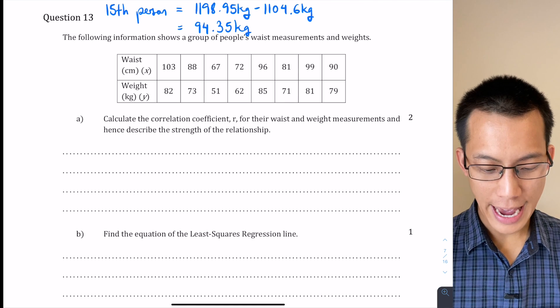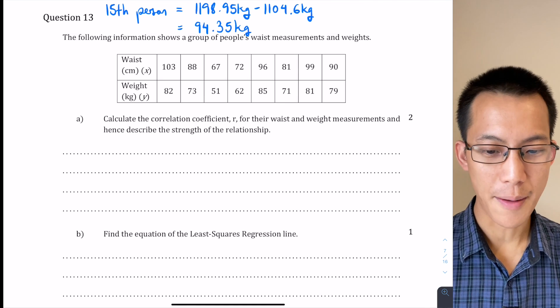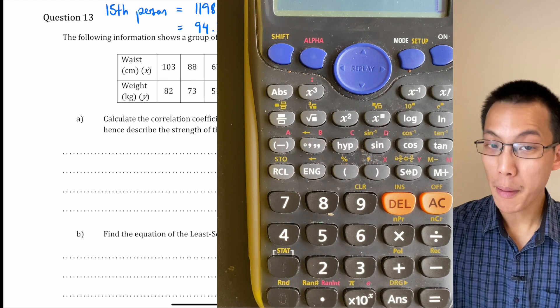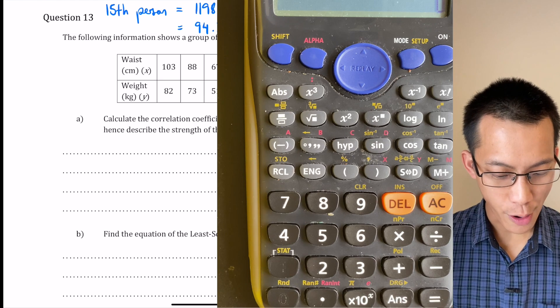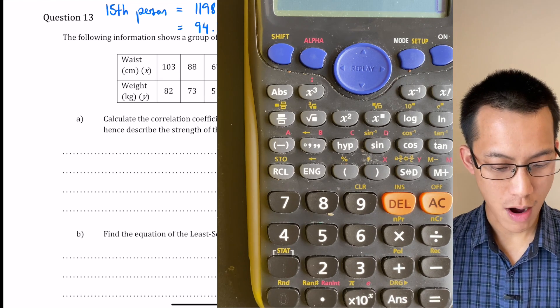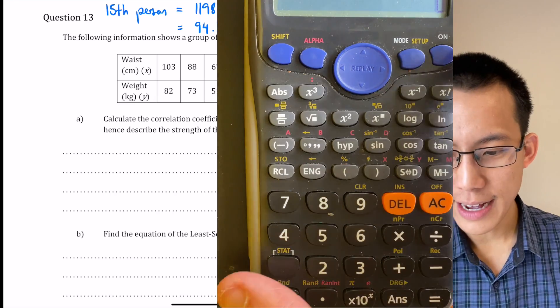So if you want to think back we had a single variable that we had to put in our data into our calculator but now we've got bivariate data. There's the waist and then there's the weight and very helpfully the question has even told us which one is X and which one is Y. So again we'll come over to our calculator now.